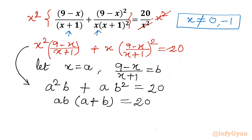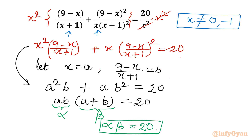Now I will define α = ab and β = a+b. Then α·β = 20 — this is like a product of roots. My target is to find α+β so that we can frame a quadratic to figure out the values of α and β.